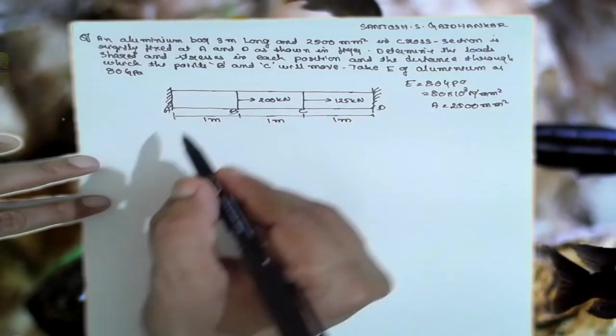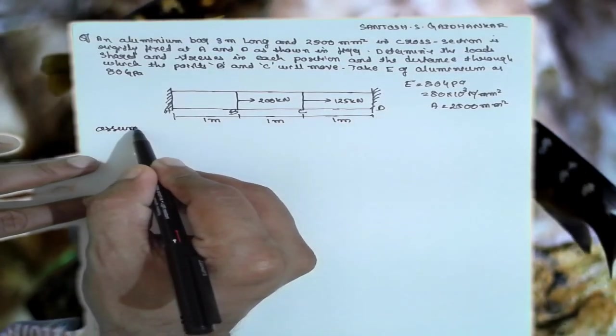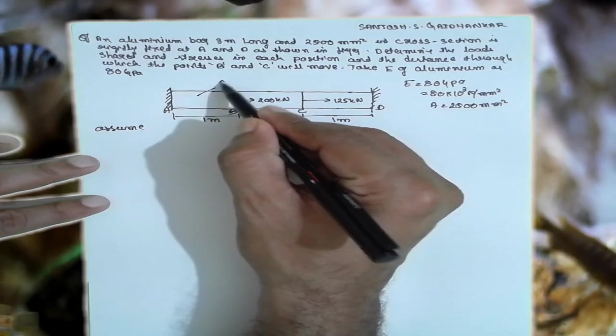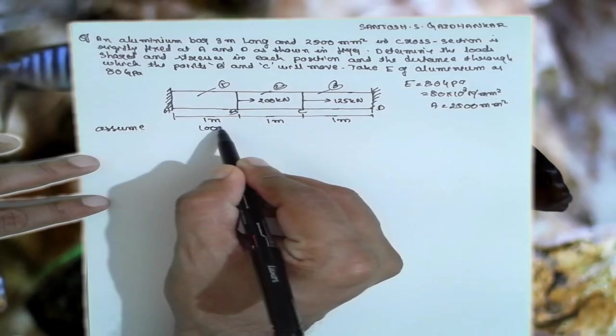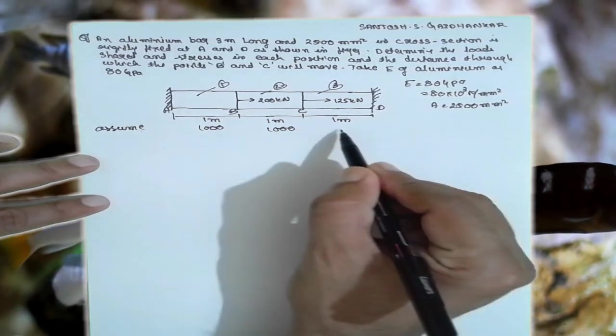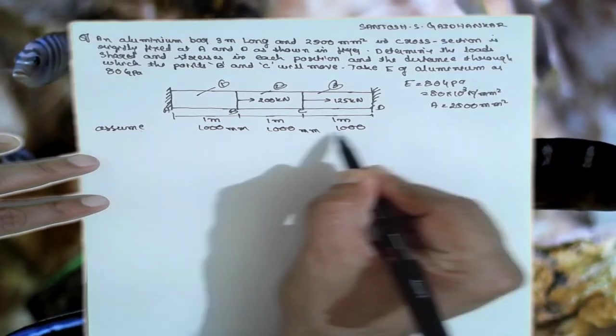Now, let us consider three sections here and assuming here. We have to create equations, assuming first part section 1, 2, and 3. And this in terms of meters we have to convert into 1000 mm, 1000, 1000 mm, converted by multiplying by 1000 here.